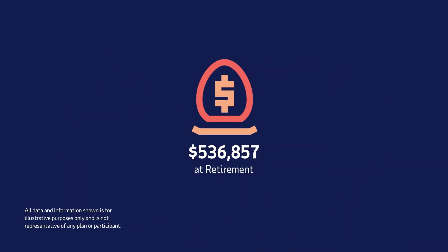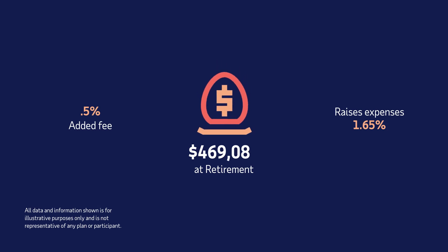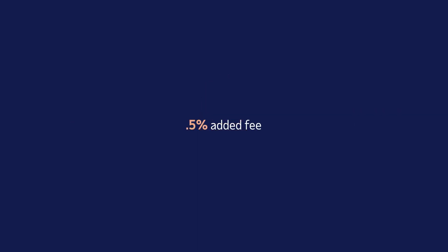But a tiny .5% added fee that raises expenses to 1.65% results in the account balance potentially only growing to $469,089. That little .5% difference will reduce the account balance by $67,768.